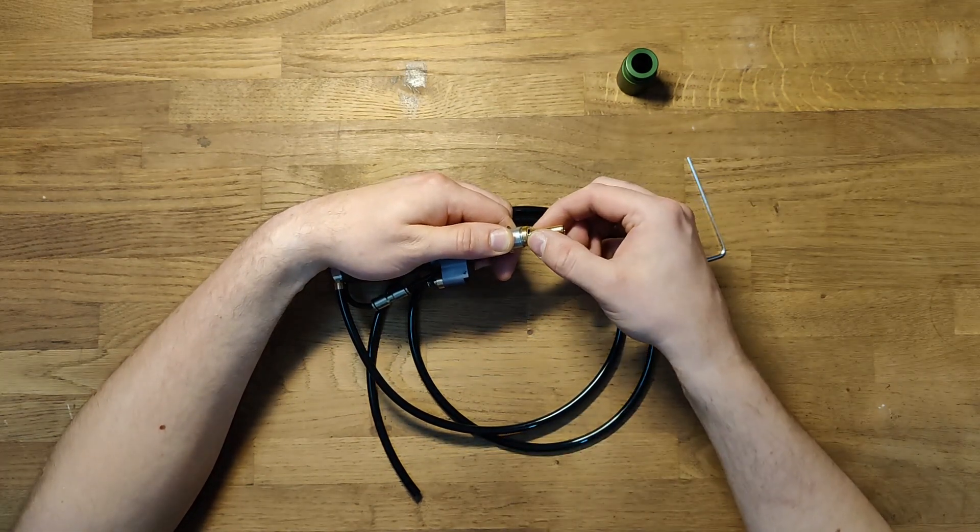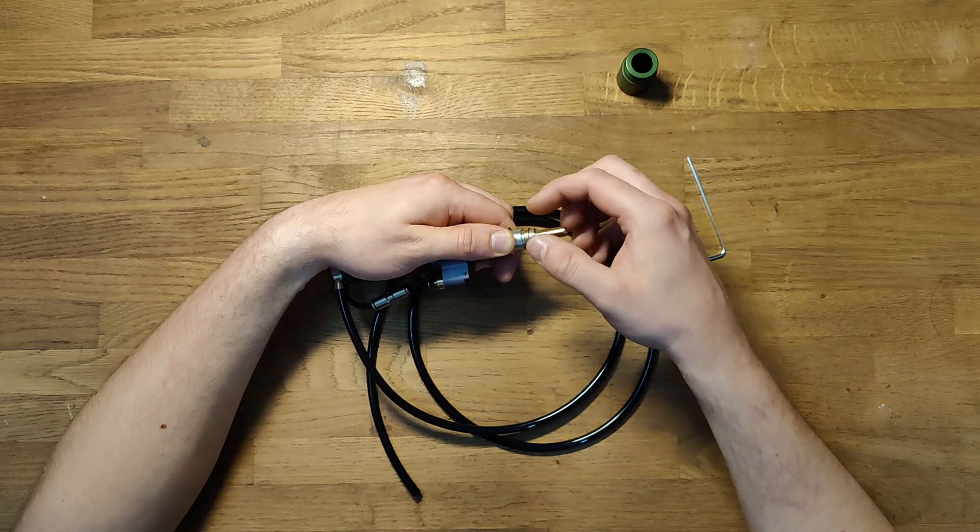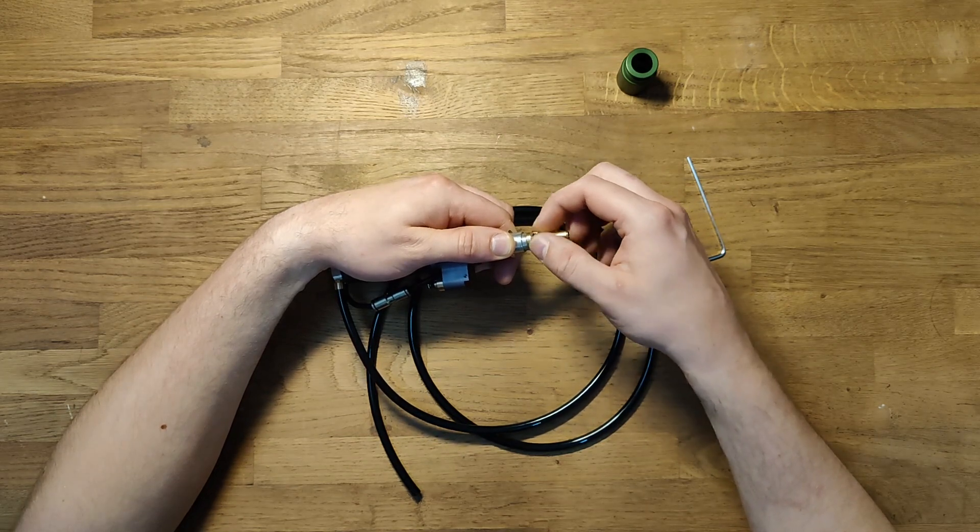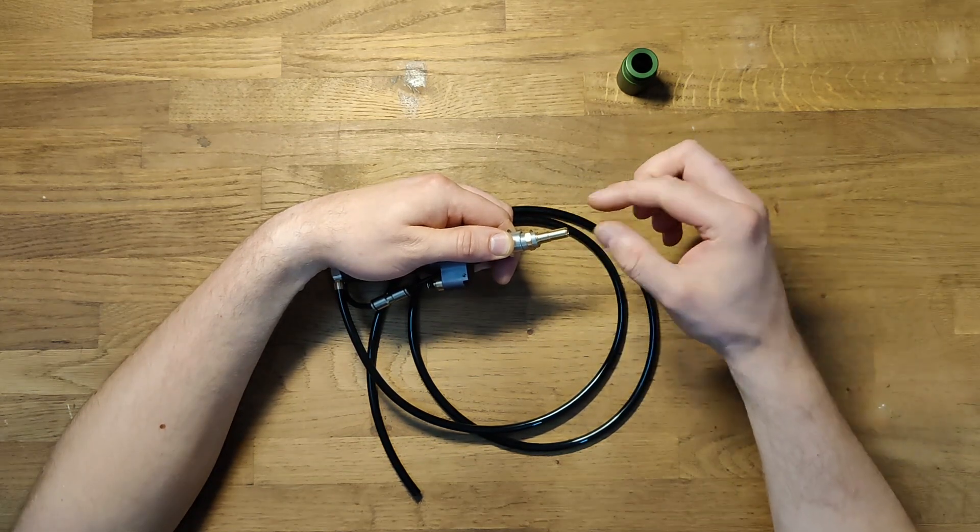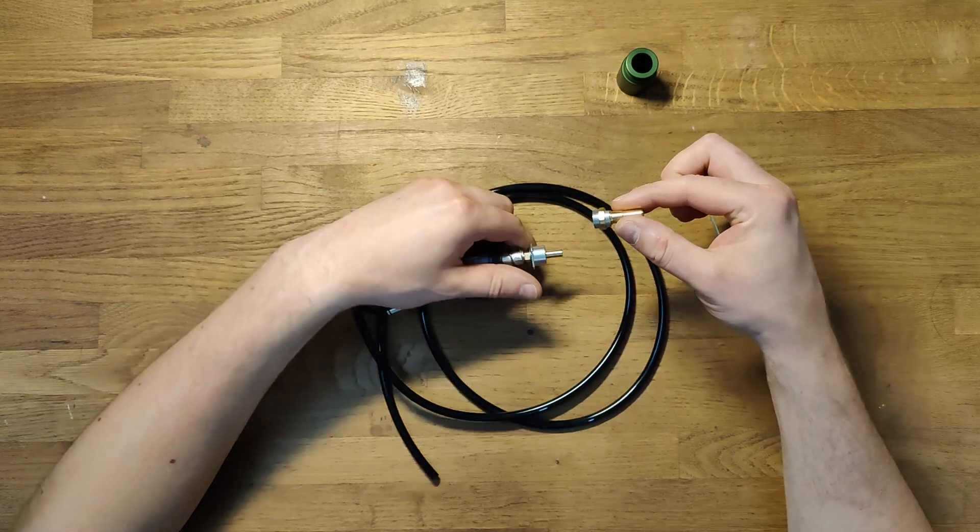When it's loose you can hold the threaded part and unscrew it. When it's completely loose simply take it off.